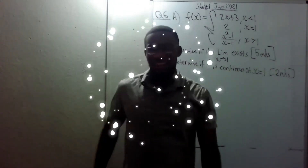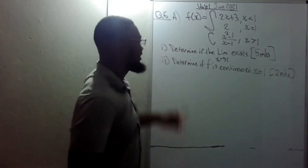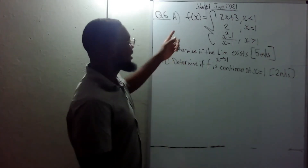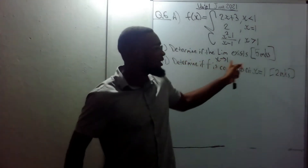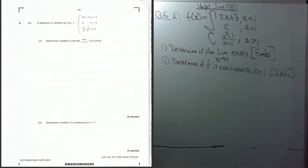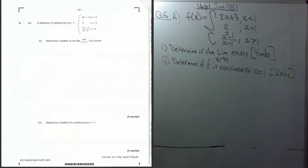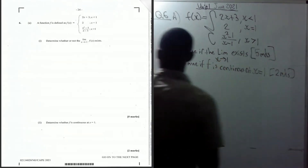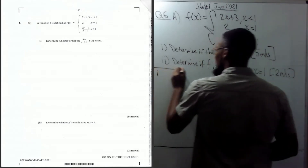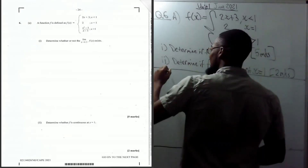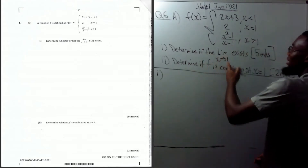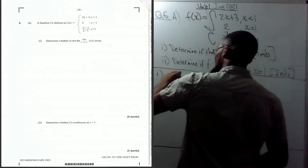We're back with question six. This gives us a piecewise function and they say determine if the limit exists as x approaches one, and determine if f is continuous at x equals one. For part one, the limit exists if the left-hand limit equals the right-hand limit.